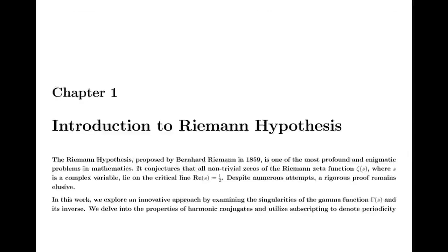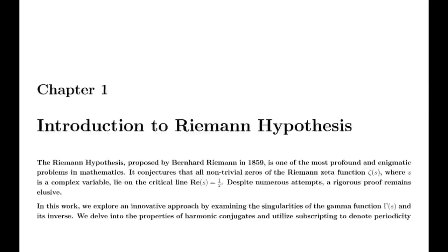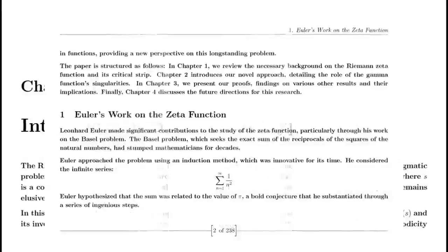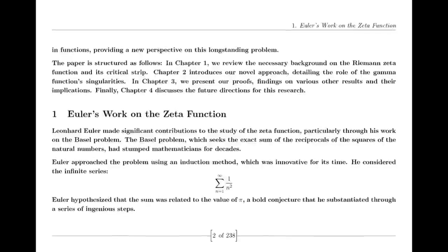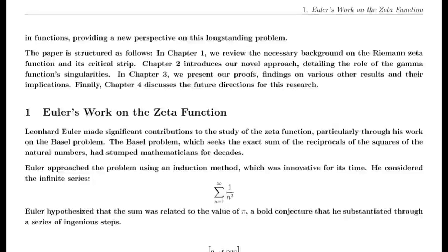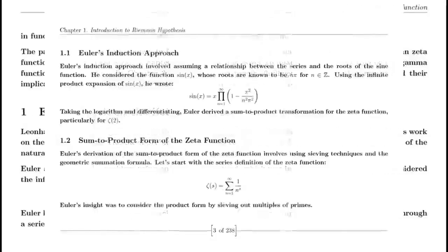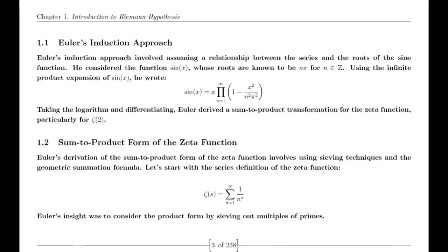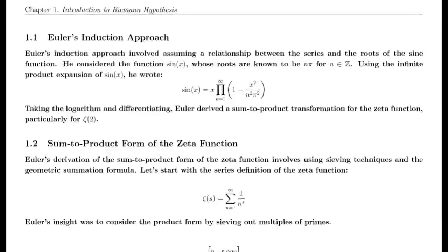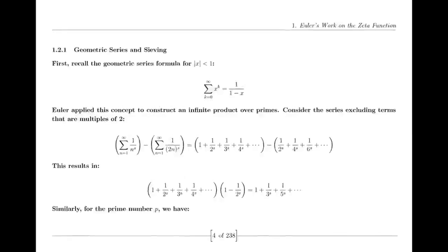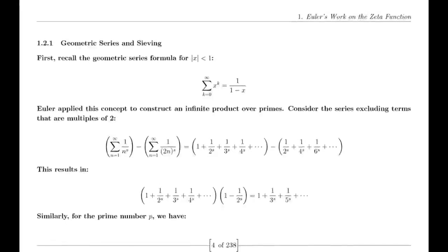One of Riemann's major discoveries was the reflection formula for the zeta function. This formula demonstrates a symmetry between the values of the zeta function at s and 1 − s. Specifically, it shows that ζ(1 − s) can be expressed in terms of ζ(s) using factors involving π, the gamma function, and trigonometric functions. This reflection formula is fundamental to the theory of the zeta function and provides deep insights into its structure.